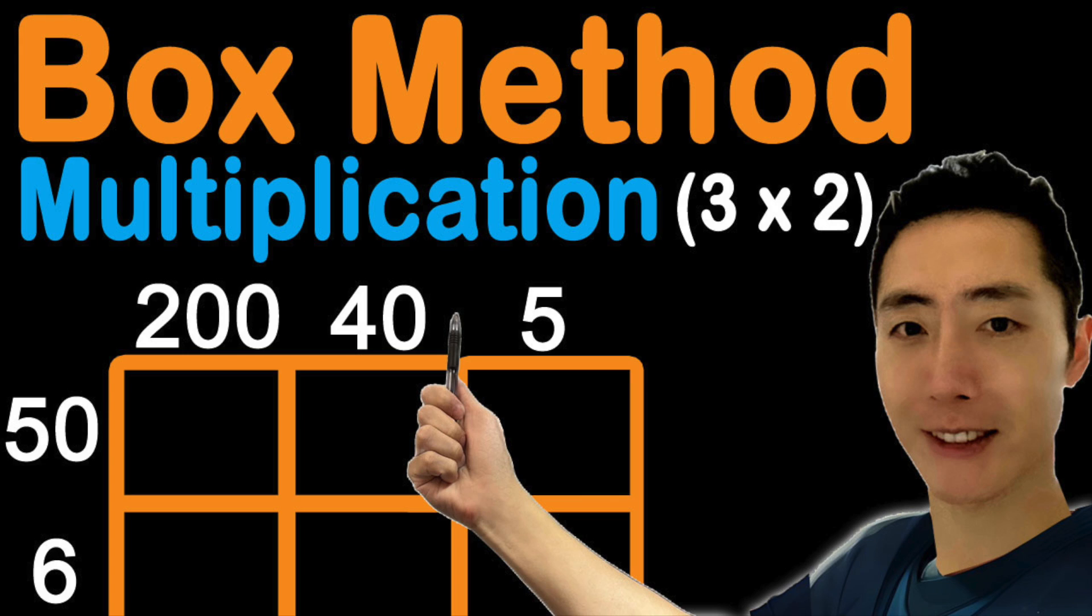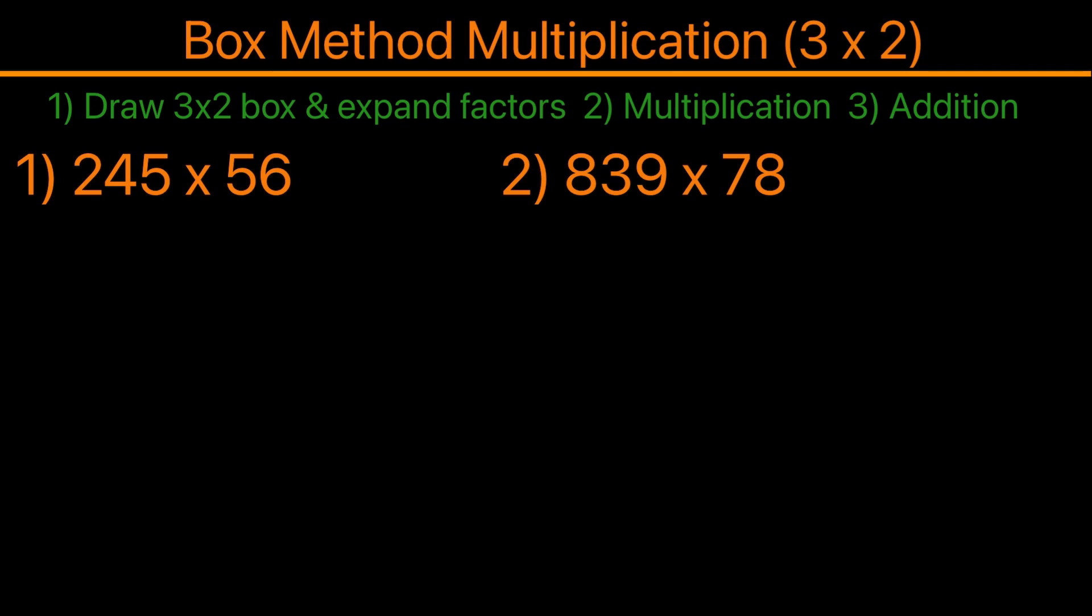In this video I'll be going over box method multiplication 3 by 2. The steps are as follows: first we want to draw a 3 by 2 box and then expand the factors. Secondly, we want to multiply, and lastly we want to add. Below are two examples and we'll be going over each one.